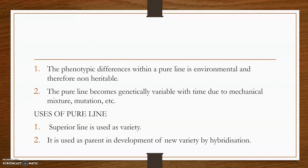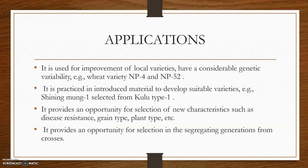From the eighth to the tenth year, the best performing strain is released and notified as a variety, and up to the tenth year more seeds are produced for distribution. Several varieties have been generated using this technique; examples include wheat varieties NP4 and NP52. It is also practiced in introduced materials to develop suitable varieties.